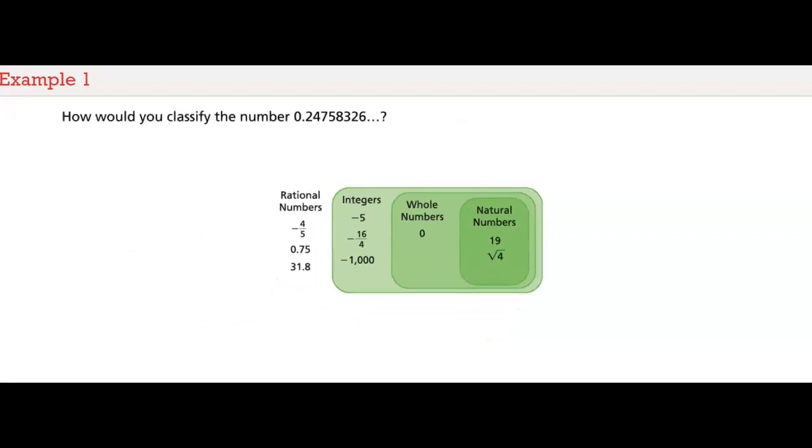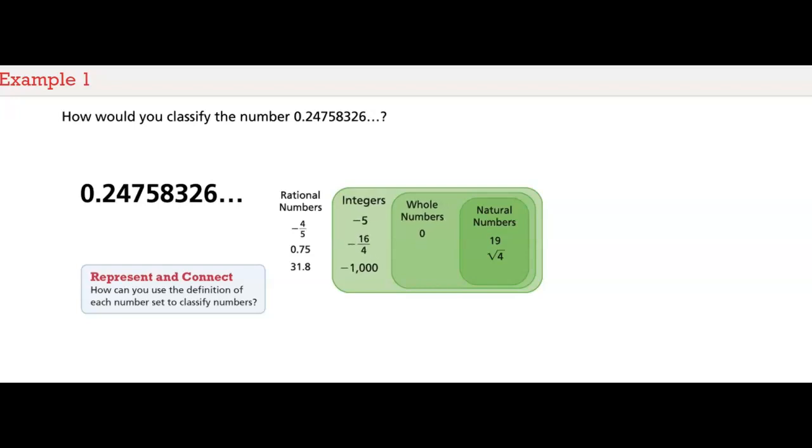How would you classify the number 0.24758326 and so on? How can you use the definition of each number set to classify numbers? Is it a natural number? No. Decimals aren't natural numbers. The same is true of whole numbers and integers in general.